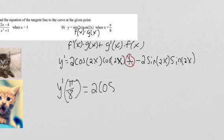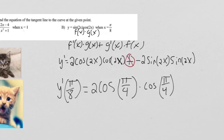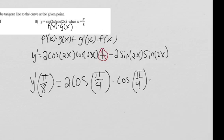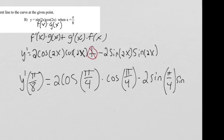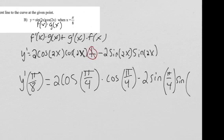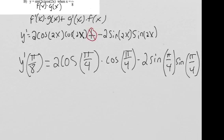To save a little work, 2 times π/8 is 2π/8, which simplifies to π/4. So we're going to get cosine(π/4), minus 2 sine — same thing, 2 times π/8 is π/4 — so we get π/4 times sine of π/4.